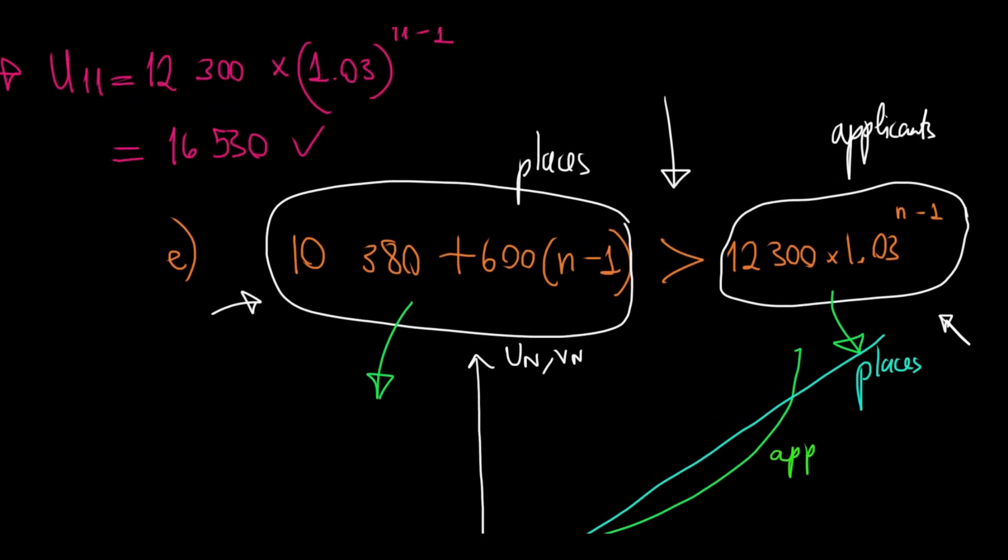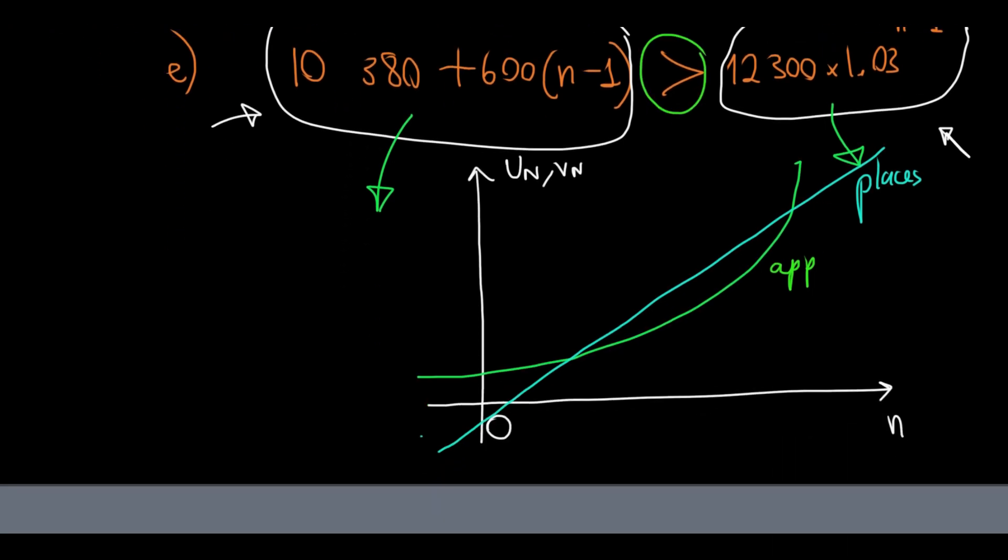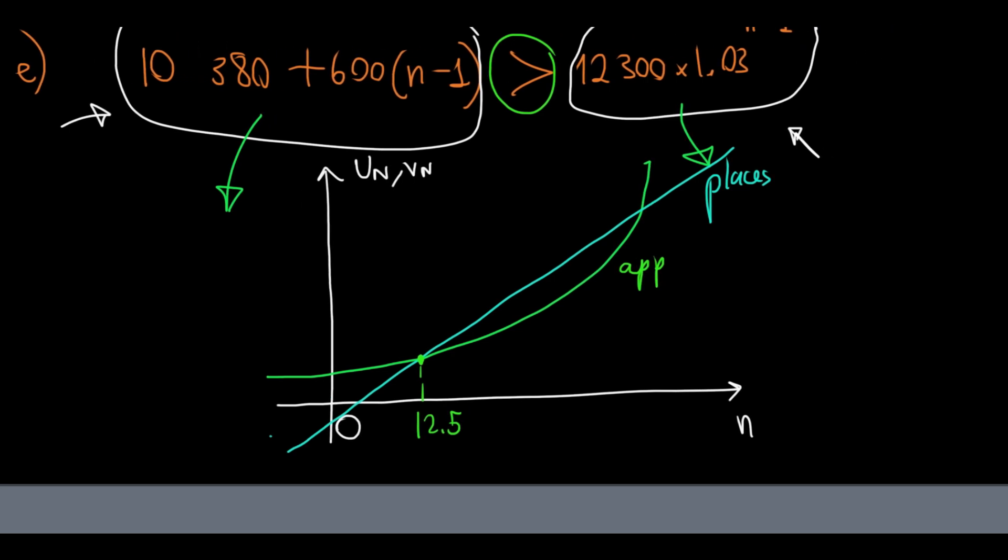the places, as you can see here, must exceed the number of applicants. I go to my graph and I can see that this happens exactly here. Beyond this threshold, the blue line exceeds the green curve. So, I need to know what's the threshold. On my calculator, I can look for that intersection. It seems to be 12.5. So, as long as n exceeds 12.5, that concludes our answer.